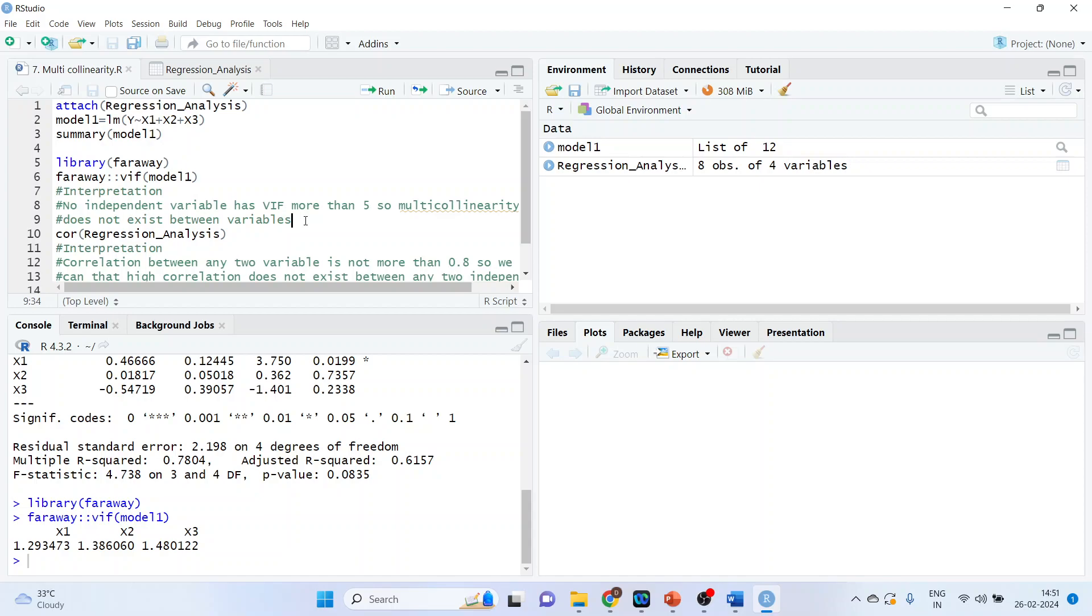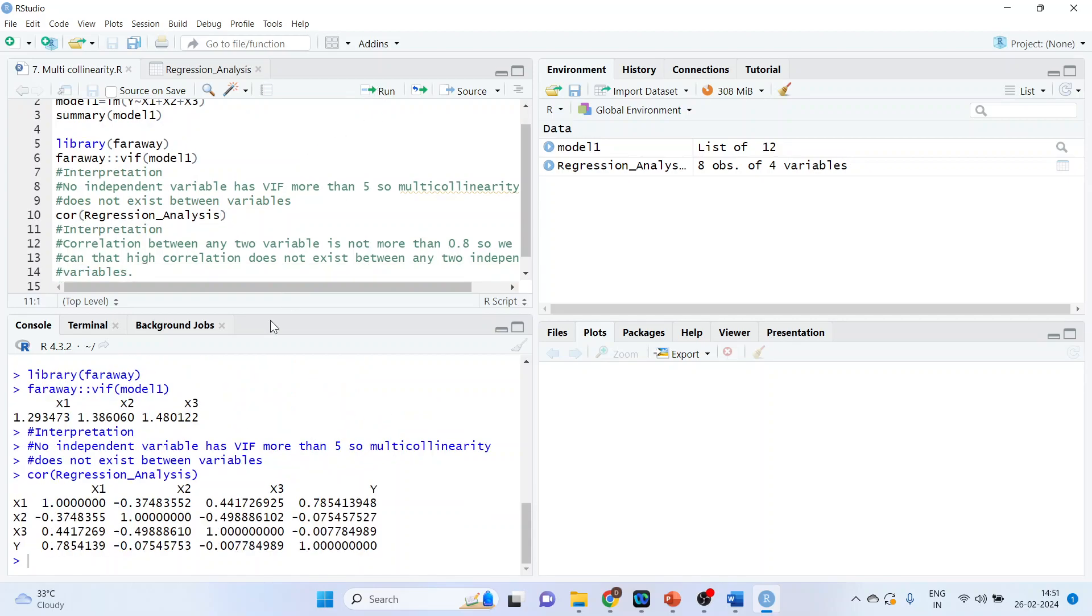In any case, if this value was more than 5, then you will have to drop the variable which is highly correlated. Now we will also check the correlation of all the independent variables by the command line cor regression analysis run. And we got the correlation of independent variables.